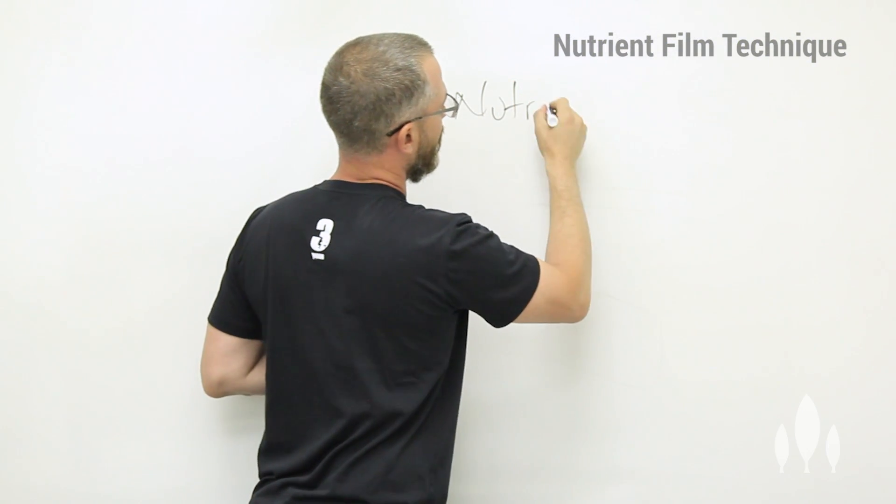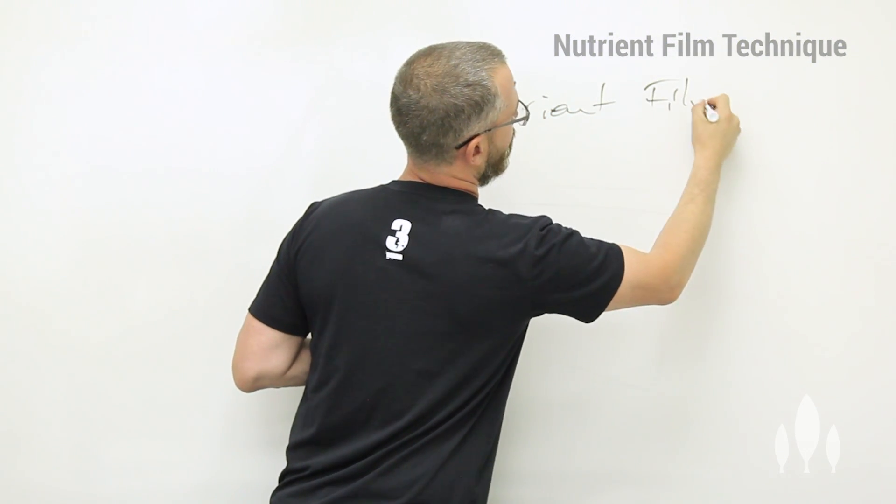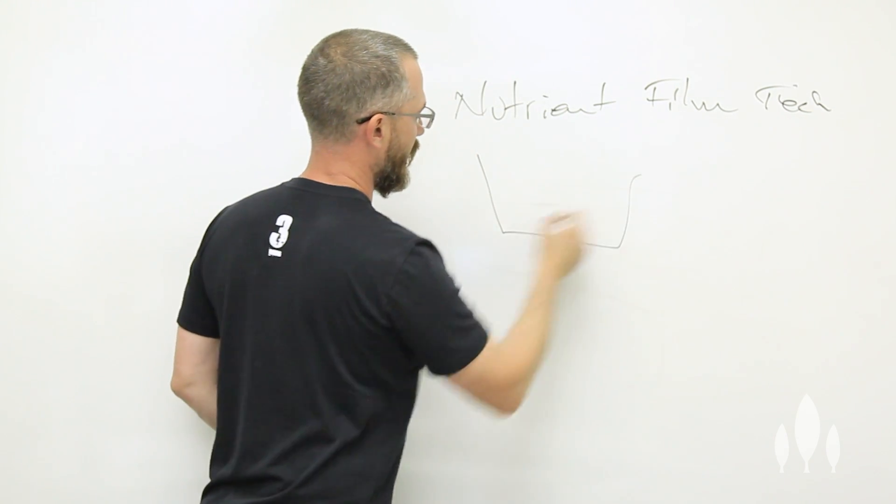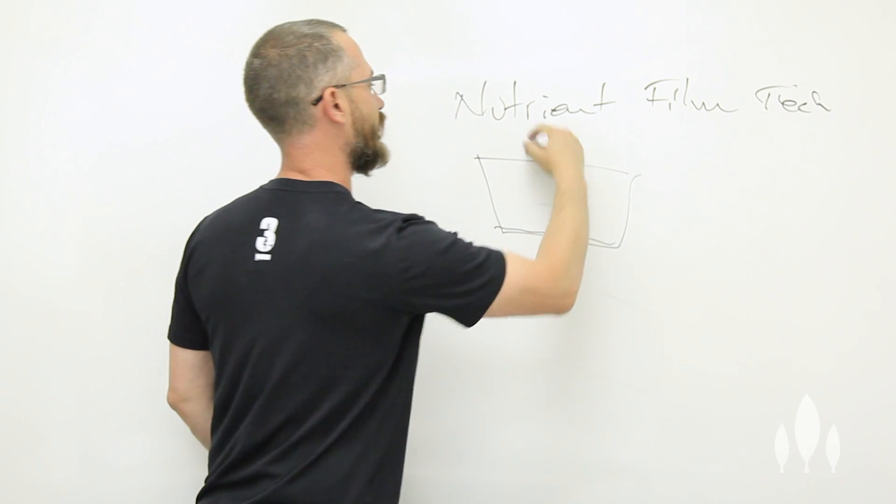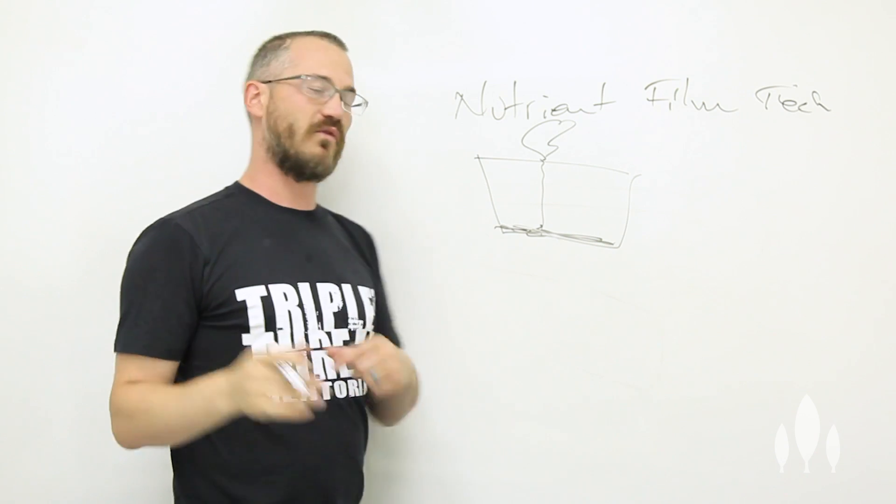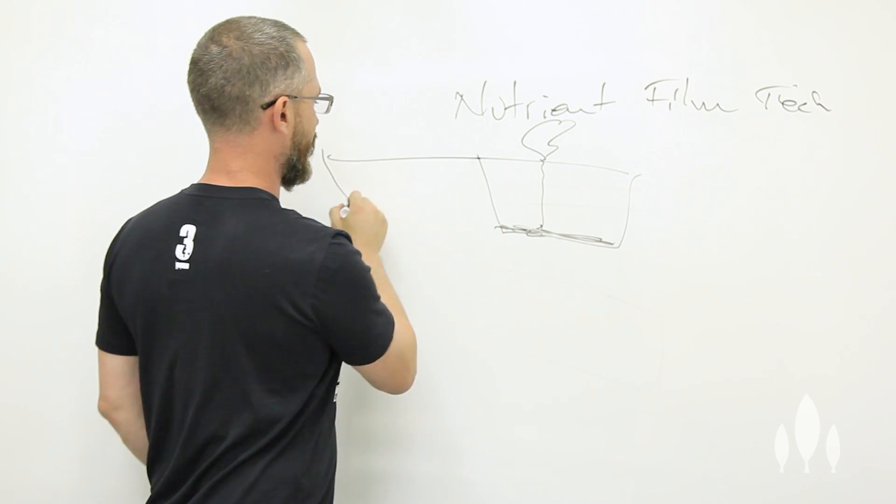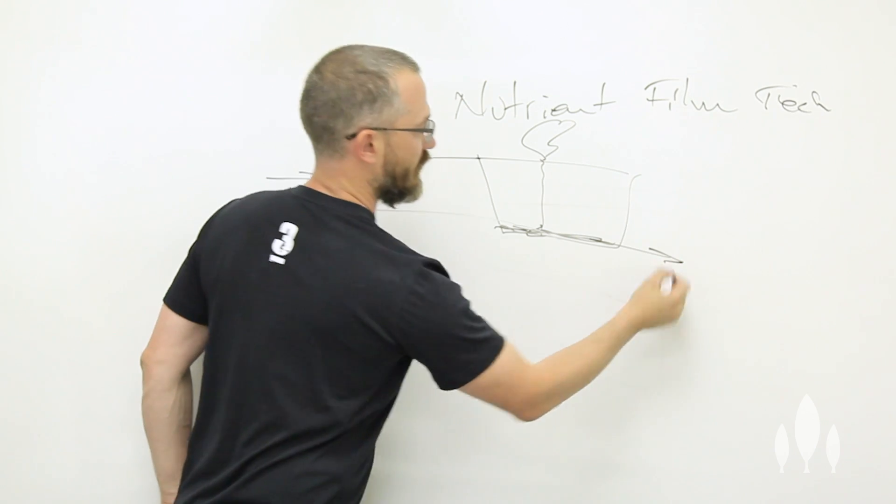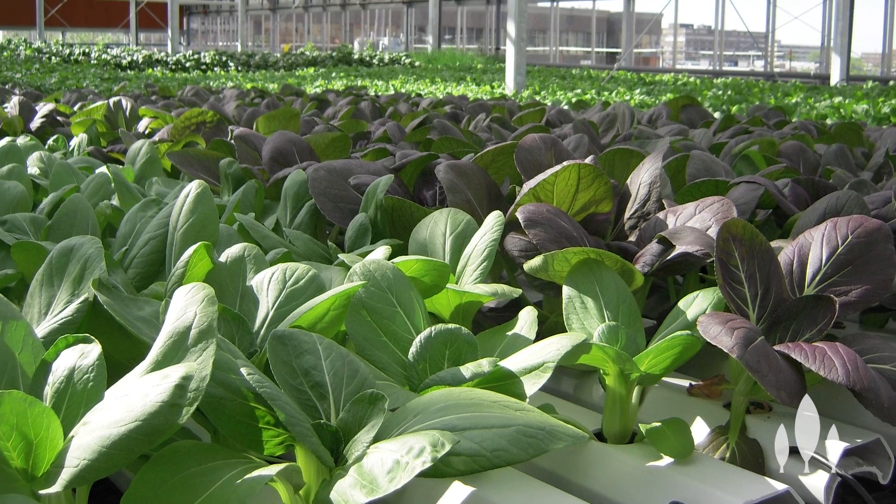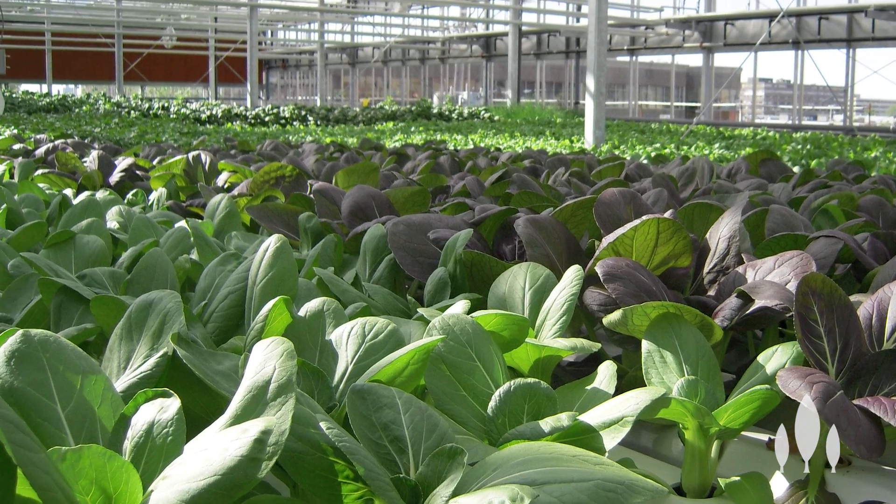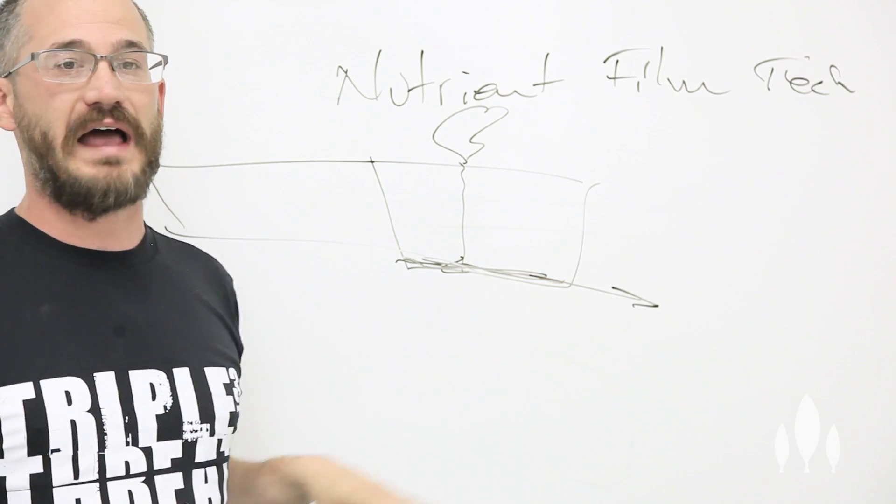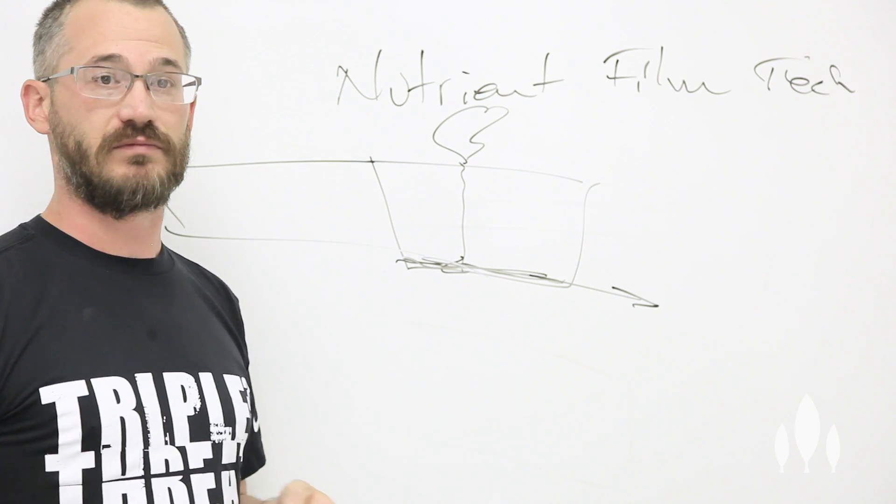So NFT is nutrient film technique. And it basically comprises of a shallow trough with a thin film of water flowing through it. There's a covering on the trough, the plant grows out of the covering, and it dangles its roots and grows its roots down into this thin film of water that runs down the length of the gutter. So water flows in here, and it flows out down here, very thin film, very slowly. And this is a really great technique, it's related to aeroponic techniques, but it's the most common greenhouse technique for growing things like greens and herbs in big, flat, single plane horizontal production facilities.